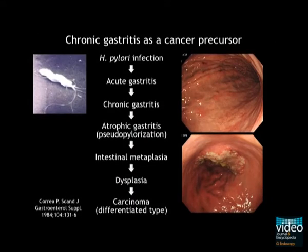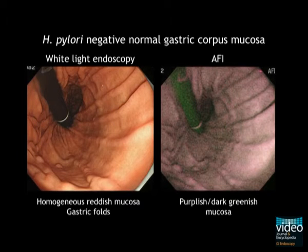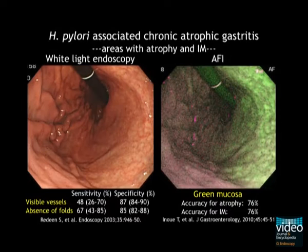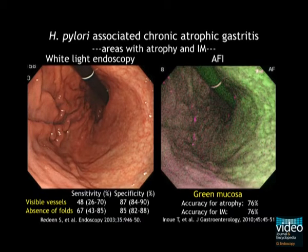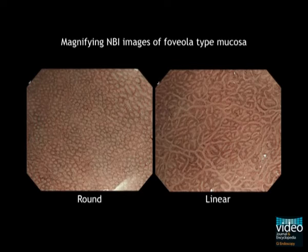Longstanding inflammation associated with H. pylori infection causes atrophy and intestinal metaplasia in the gastric mucosa. In the corpus, H. pylori negative mucosa has gastric folds in the white light image and a purplish colour in the AFI image. While in patients with chronic atrophic gastritis, mucosa with atrophy or intestinal metaplasia looks whitish, increases visibility of mucosal vessels and loses gastric folds in the white light image. In the AFI image, the areas with atrophy or intestinal metaplasia look bright greenish. In the magnifying NBI image, mucosa with inflammation have round pits, while mucosa with atrophy or intestinal metaplasia have linear gastric pits that are surrounded with brownish capillaries.